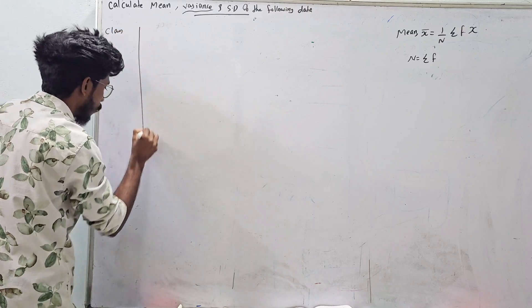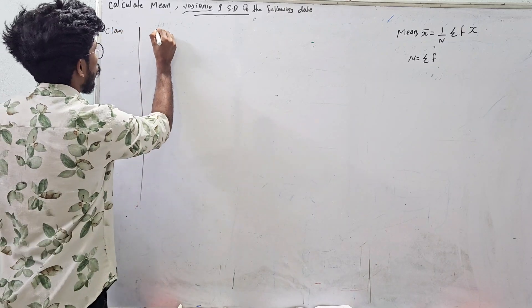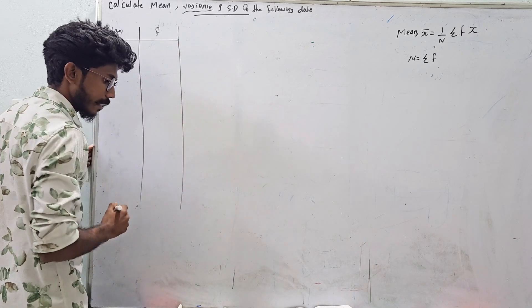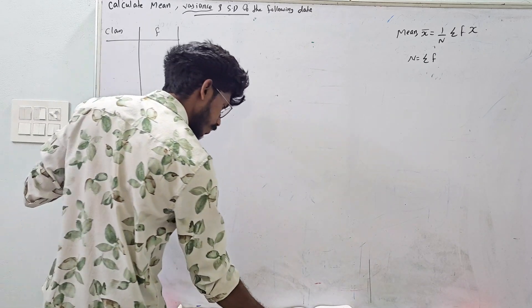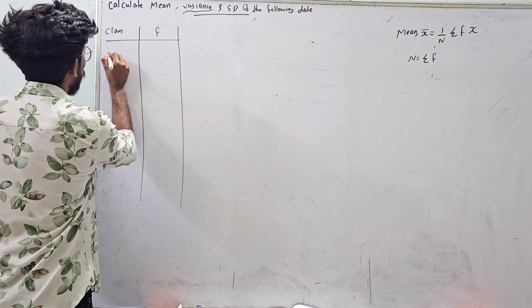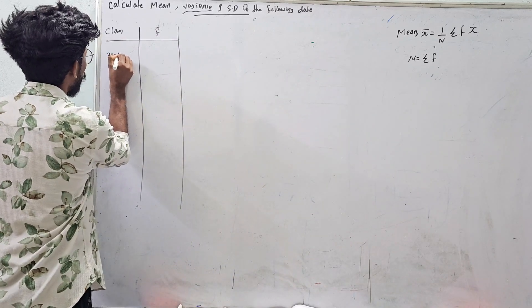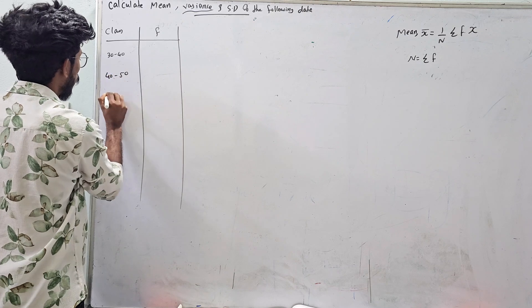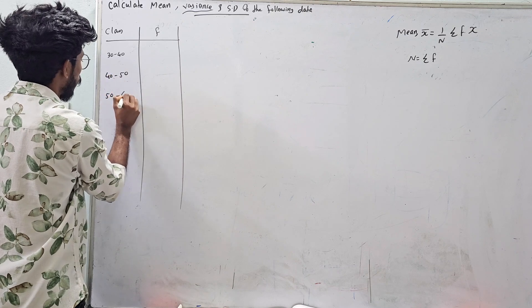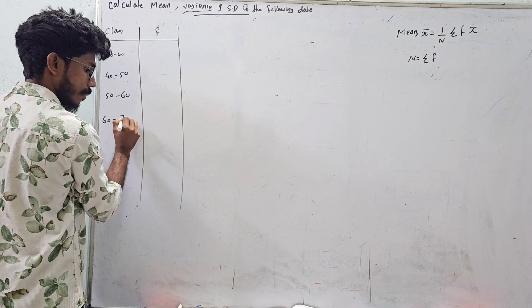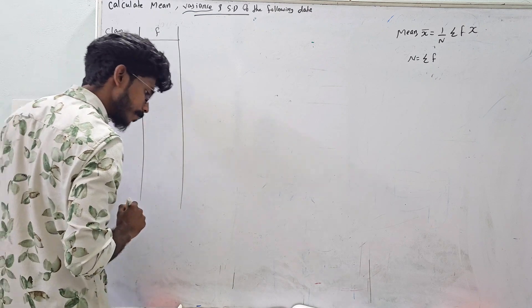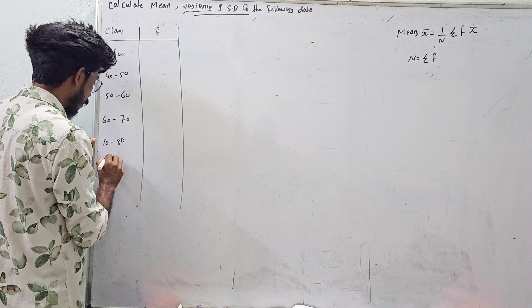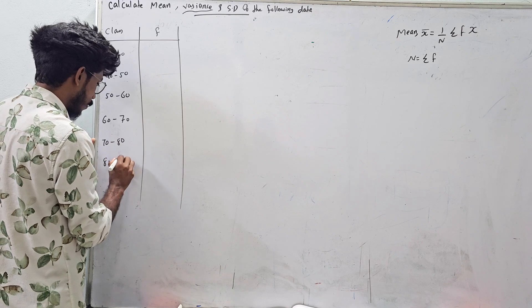You write the frequency. The class intervals are: 30 to 40, 40 to 50, 50 to 60, 60 to 70, 70 to 80, and 80 to 90.